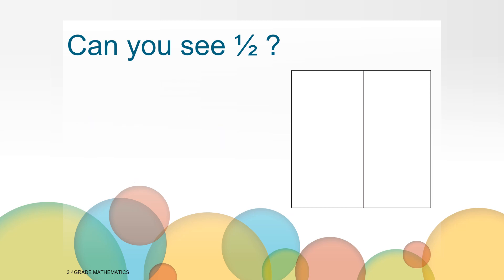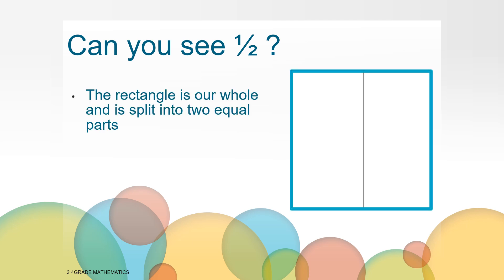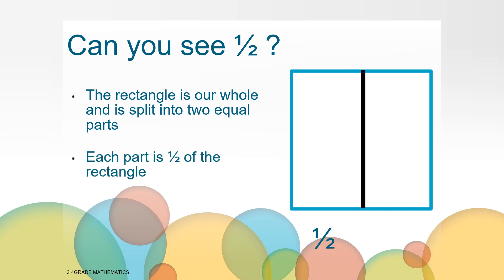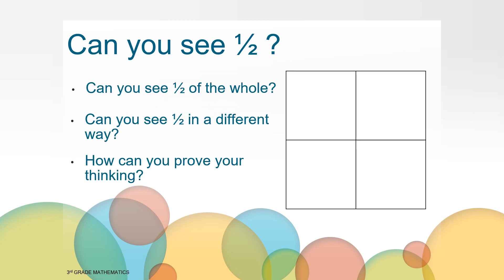You might have thought about how our rectangle is our whole and it is split into two equal parts, so each part is one half of the whole rectangle. Let's look at another image. Can you see one half of this whole? Can you see one half in a different way? How can you prove your thinking? I'll give you a moment to think about these questions.